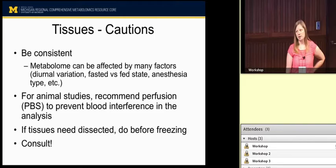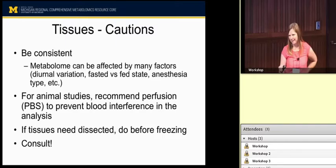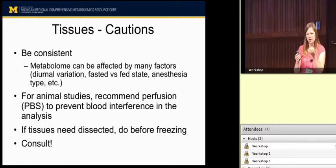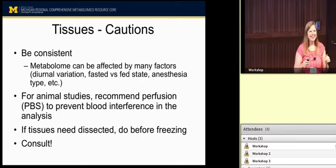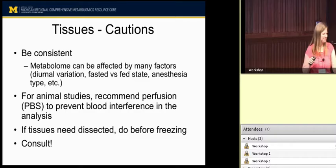If your tissues need to be dissected, please do it before sending them. If you want to look at the aorta and you send us the heart, we'd prefer you give us just the part you want to analyze. Also, if you take one animal and you're interested in three tissues, please separate those tissues out by type — don't put all three in the same tube. We're pretty competent and can normally tell the difference, but please do separate them out.